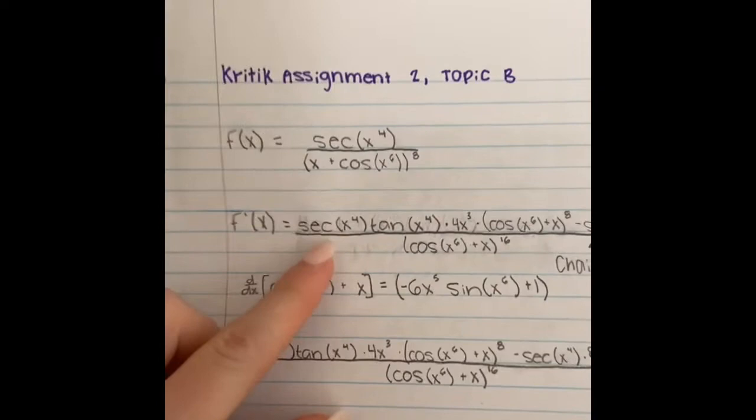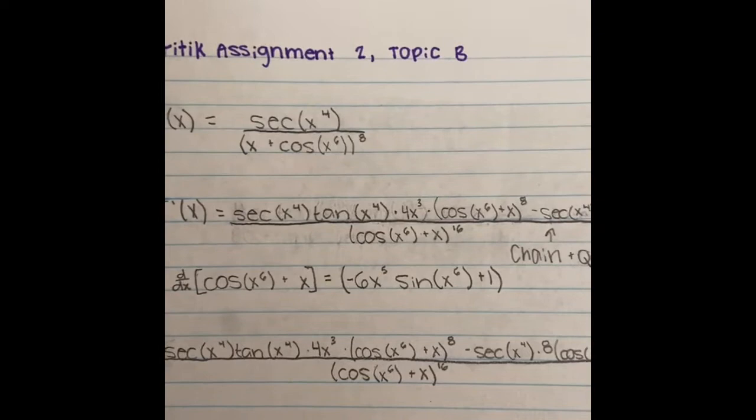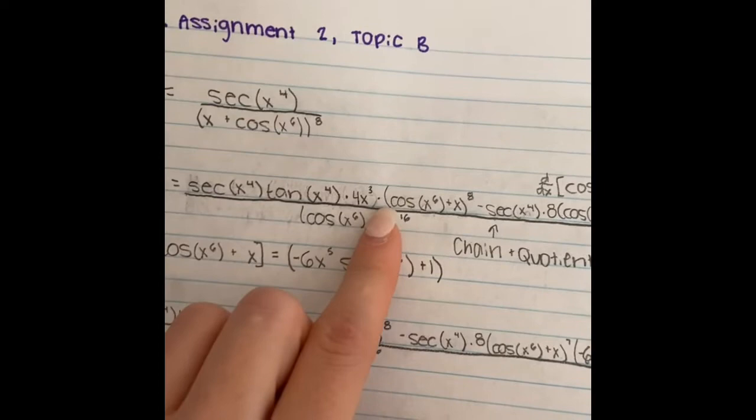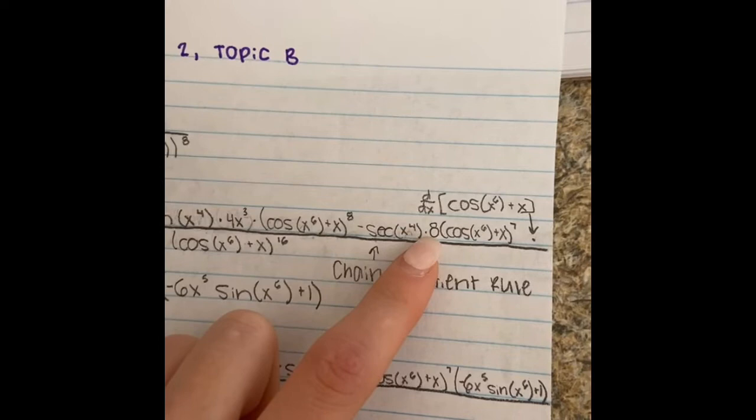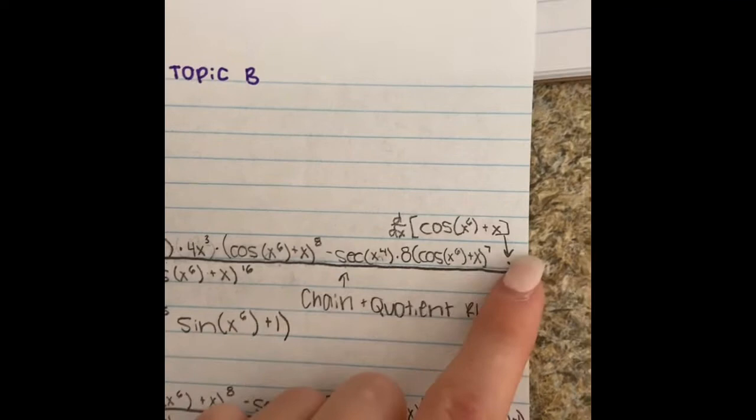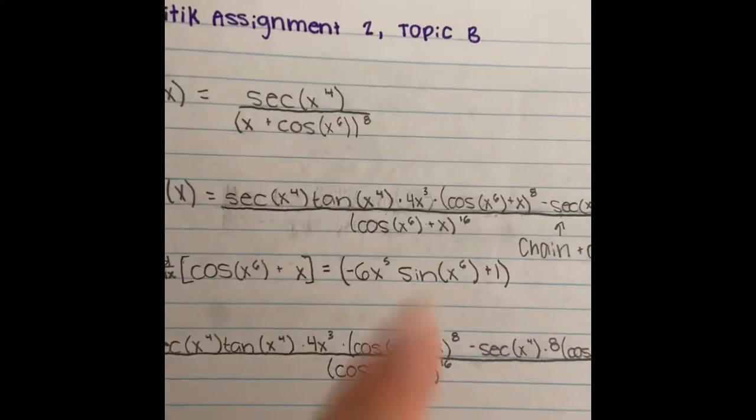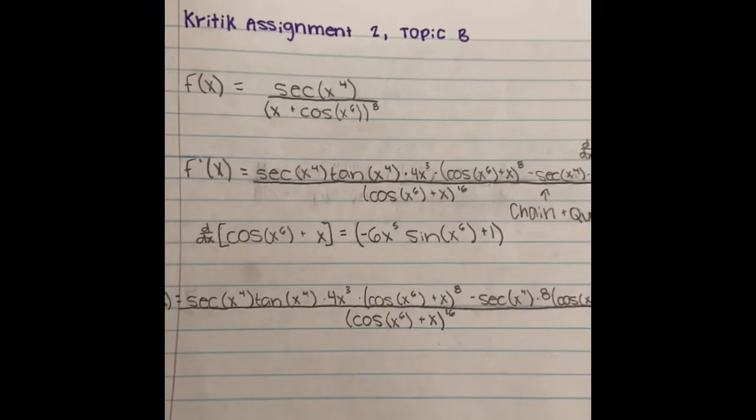I use the chain rule for the numerator, which is secant of x to the fourth times tangent x to the fourth times 4x cubed, and then times cosine x to the sixth plus x to the eighth. That would be minus secant x to the fourth times eight times cosine x to the sixth plus x to the power of seven, and then — I ran out of room — but you would multiply that by the derivative of the denominator. All of that is over the denominator squared, which is cosine x to the sixth plus x, all to the sixteenth power.